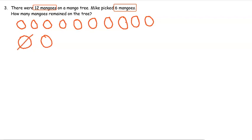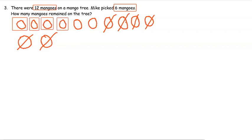Eleven and twelve. Mike picked six mangoes, so we cancel those six: one, two, three, four, five, six. How many remained? Let's count together: one, two, three, four, five, and six. So six mangoes remained on the tree.